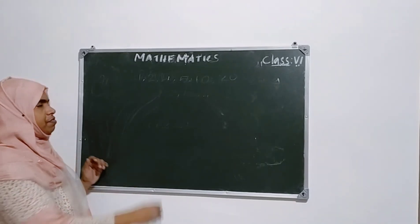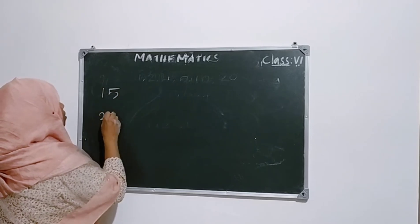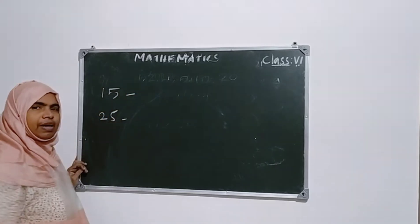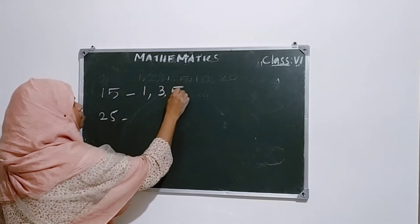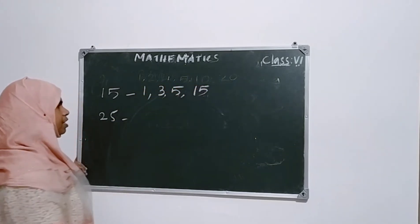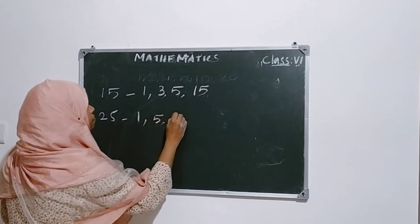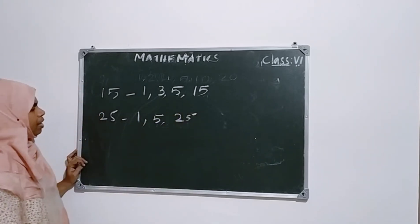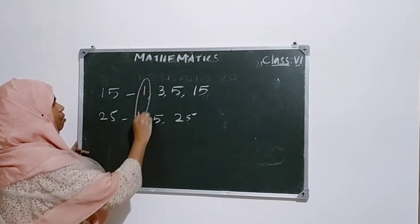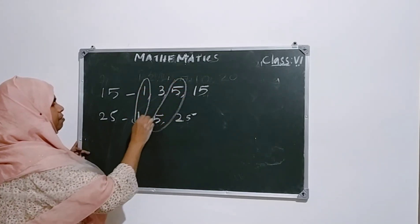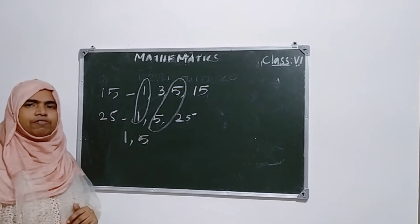Next question: 15 and 25. Factors of 15: 1, 3, 5, and 15. Factors of 25: 1, 5, 25. Here the common factors are 1 and 5. So 1 and 5 are the common factors.